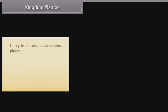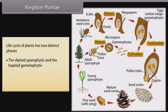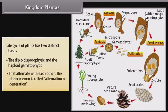The life cycle of plants has two distinct phases: the diploid sporophytic and haploid gametophytic phases, that alternate with each other. This phenomenon is called alternation of generations.